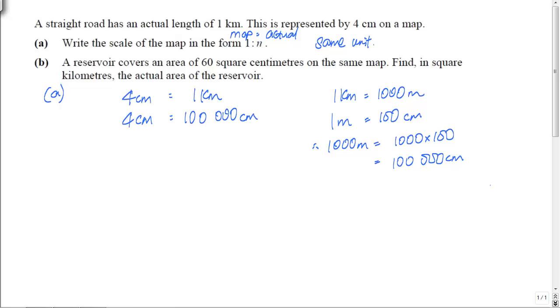So we are almost there, just that we need to have the ratio to be 1 is to N. So what we're going to do here is, everything divide by 4. So you get 1 cm is to 25,000 cm. Since both have the same units, you can drop the cm. And therefore, the value of N will be 25,000.